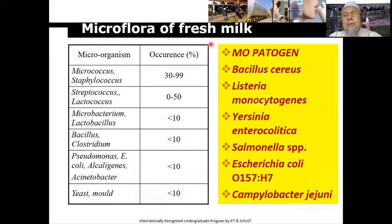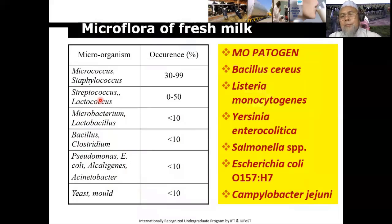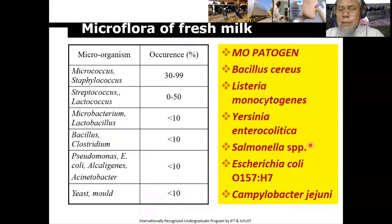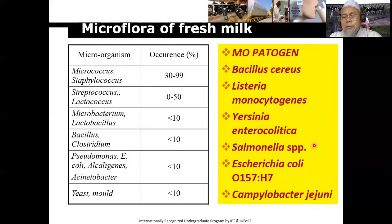Beberapa contoh mikroflora susu yang segar, kalau kita lihat di sini lebih banyak mikroba-mikroba pembentuk asam seperti Lactobacillus. Namun kadang-kadang juga ada mikroba patogen yang perlu kita perhatikan, seperti Bacillus cereus, Listeria monocytogenes, Salmonella. Dalam produk pangan hewani seperti daging, ikan, susu, dan poultry, Salmonella selalu menjadi karakteristik yang harus negatif per 25 gram, atau kalau susu per 25 ml.